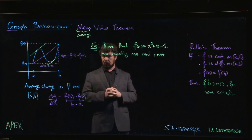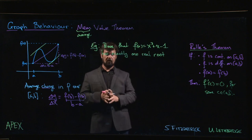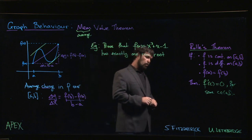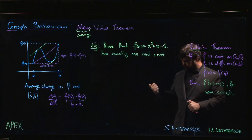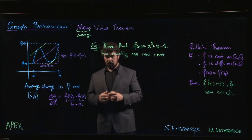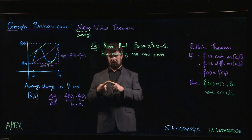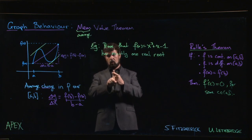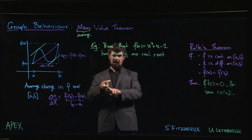Here's a somewhat more challenging problem involving Rolle's theorem. We want to prove that this cubic function has exactly one real root — it has at least one, but it doesn't have more than one. One strategy for a problem like this is to do two separate things: first prove that at least one real root exists, and then show that it has at most one.